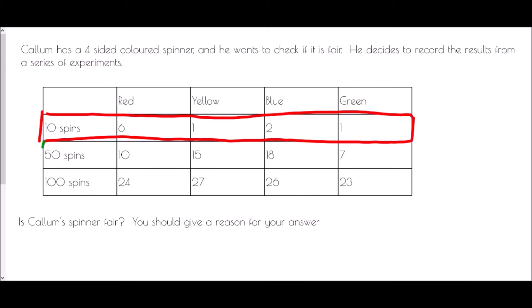But then we've continued the experiment until we had 50 spins. And when we get to 50 spins, again we would still be expecting roughly equal numbers of each of the four colors if it was a fair spinner. And at this point we have 10, 15, 18, and 7. Now these are getting closer, but still 18 is much more than 7.